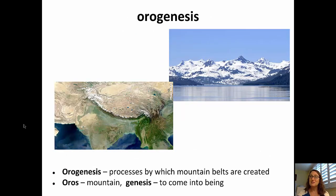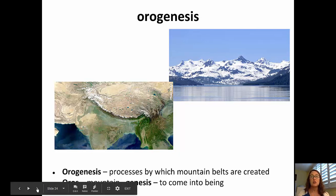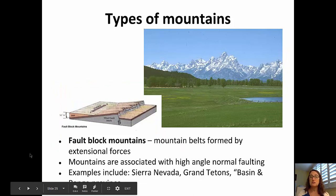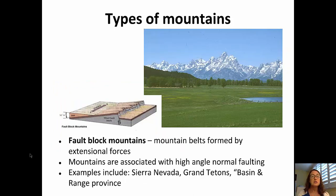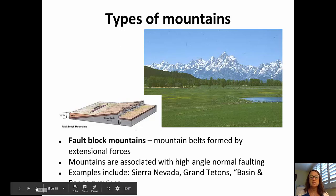Moving on to mountain building, or orogenesis — 'oros' meaning mountain and 'genesis' meaning coming into being. Orogenesis is the process by which mountains or mountain belts are created. We have four main types. The first is fault block mountains, which are common in regions with extensional forces and are associated with high-angle normal faulting. Examples include the Sierra Nevada, the Grand Tetons, and the Basin and Range Province.